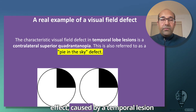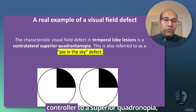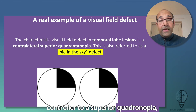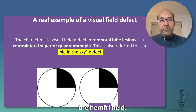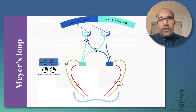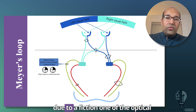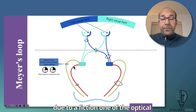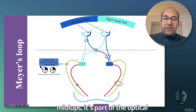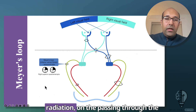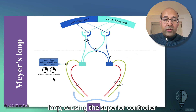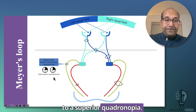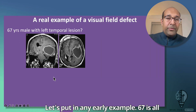Now, a bit more on the visual field defect. A temporal lobe lesion causes a contralateral superior quadrantanopia, also referred to as 'pie in the sky' on the Humphrey visual field. This occurs due to involvement of Meyer's loop — part of the optic radiation fibers passing through the temporal lobe — causing the contralateral superior quadrantanopia.